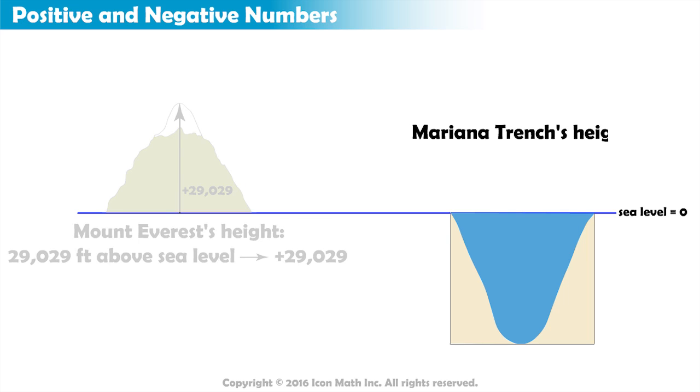The Mariana Trench, the deepest part of the world's ocean, is 36,070 feet below sea level. When writing this height as an integer, we use a negative symbol to show that the Mariana Trench is below sea level. The integer negative 36,070 can be used to describe the height of the Mariana Trench.